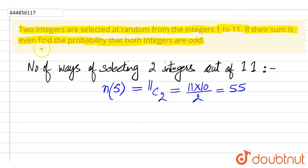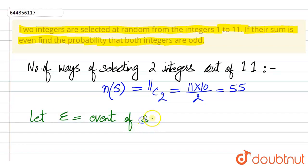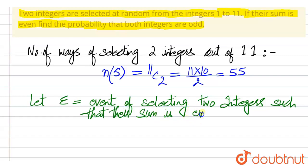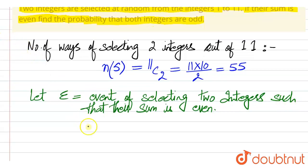It is given that the sum is even. Let E denote the event of selecting two integers out of these integers such that their sum is even.